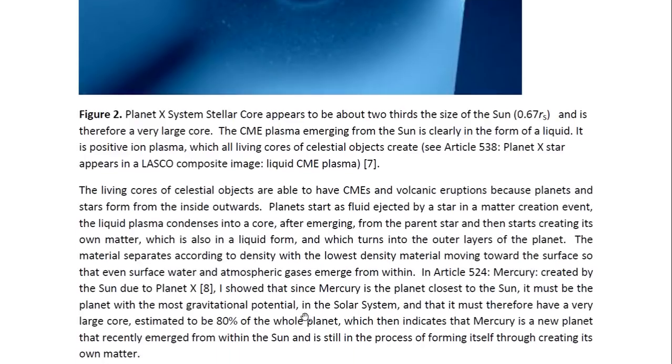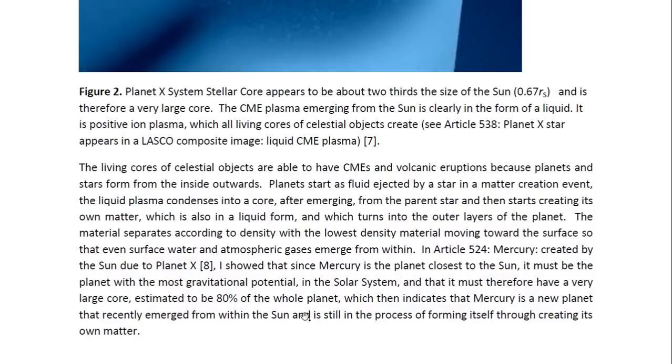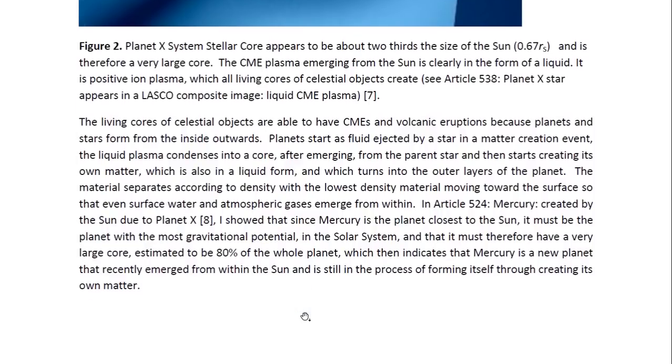In Article 524 entitled Mercury Created by the Sun Due to Planet X, I show that since Mercury is the planet closest to the sun, it must be the planet with the most gravitational potential in the solar system, and that it must therefore have a very large core estimated to be 80% of the whole planet, which then indicates that Mercury is a new planet that recently emerged from within the sun and is still in the process of forming itself through creating its own matter.